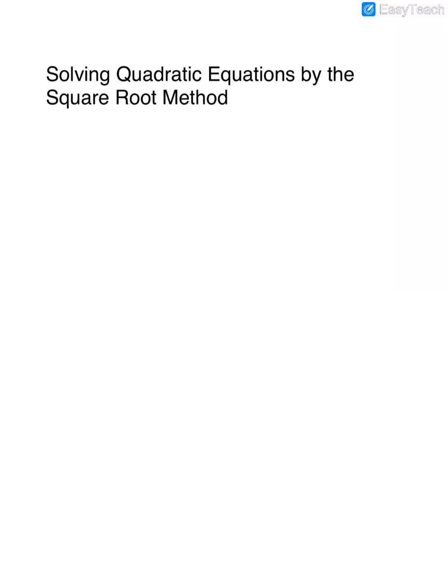Solving quadratic equations by the square root method. We've solved quadratic equations by factoring, but not all quadratic equations can be factored. So this is another method we can use. We can use this method whenever our quadratic equation is missing the bx term. In the square root method we isolate whatever is being squared and we do the inverse operation, which is to take the square root.